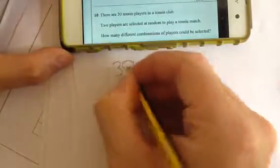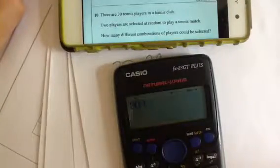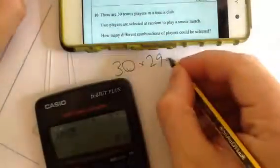First of all, I've got 30 players to choose from, and then after those 30 players, I've got 29 possible ones to choose from. So I'll do 30 times 29, which equals 870.